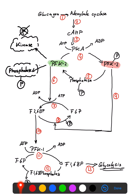Fructose-2,6-bisphosphate is a very potent activator of PFK1. Only if fructose-2,6-bisphosphate is present does phosphofructokinase 1 become activated and catalyze its reaction, which ultimately leads into glycolysis. If PFK2 is phosphorylated, the kinase domain is turned off and PFK2 can no longer produce fructose-2,6-bisphosphate. However, the phosphatase domain is activated upon phosphorylation, and it removes the phosphate from fructose-2,6-bisphosphate, converting it back into fructose-6-phosphate.